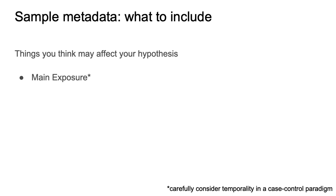When you go to collect your metadata, the first most important thing you want to make sure you have is information about your main exposure — the thing that you're really researching. If you're doing a study of soils and location, you want to make sure that you have the longitude and latitude. If you're interested in humans and disease status, you need to know whether or not the person has the disease or is clinically healthy. If you want to look at mice and genotype, you want to make sure that you know what genotype your mice are.